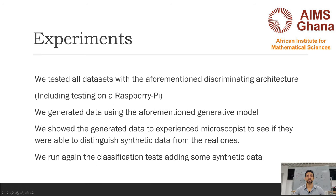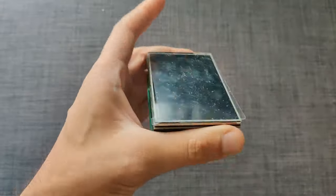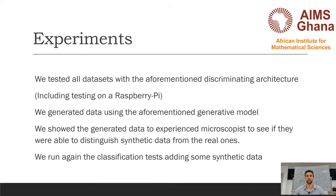All datasets were tested with the discriminant architecture, trained offline on a decent laptop, but then tested for segmentation on a Raspberry Pi — an inexpensive small computer useful in low-cost resource settings. We also generated synthetic data using the generative model and showed it to an experienced microscopist to see if they could distinguish synthetic from real images. Finally, we ran classification tests adding synthetic data to see if there was any improvement.